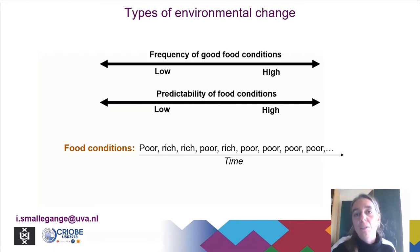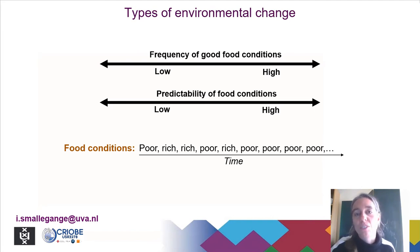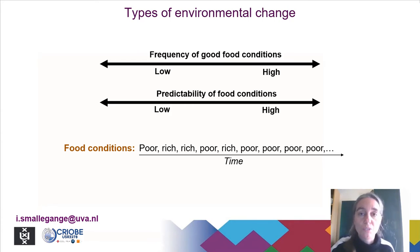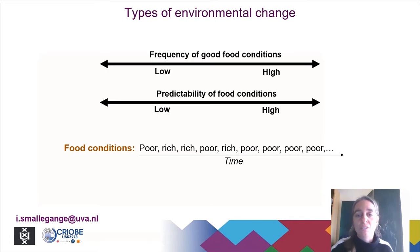Another way in which such a time series can be characterized is by the frequency with which good food conditions occur. These frequencies can be very low, with very few occurrences of good food conditions, or the frequency can be very high, in which case food conditions are nearly always very good.